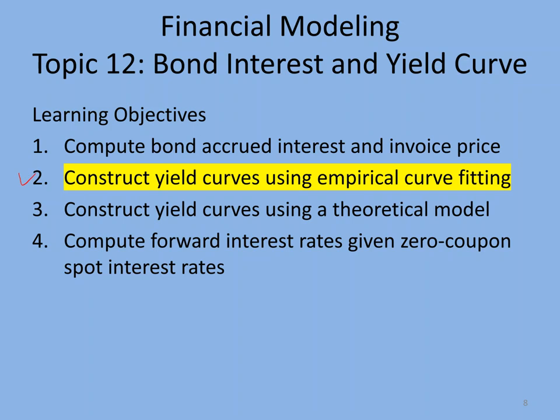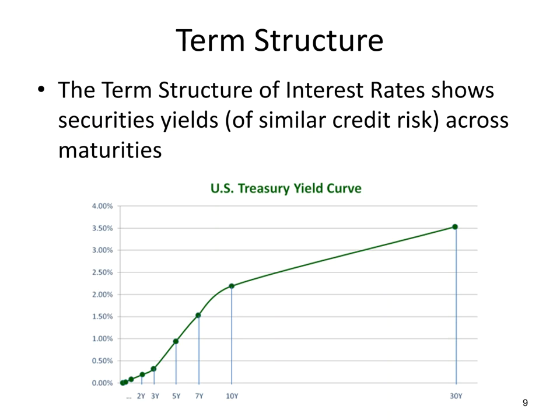We're going to construct yield curves using empirical curve fitting. Let's talk about term structure, also called the term structure of interest rates. It simply shows a graphical representation of the yield and maturity of different maturities of bonds with the same risk. If we look at Treasury bonds and look at the yield on the 2-year, 3, 5, 7, 10, and 30-year, and draw a line through that, that's the yield curve or the term structure of interest rates.